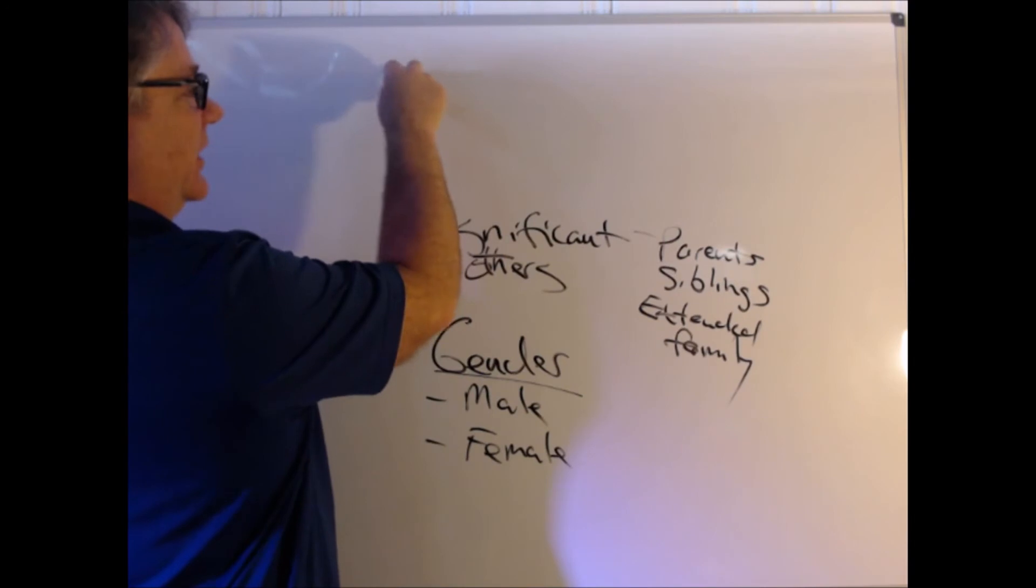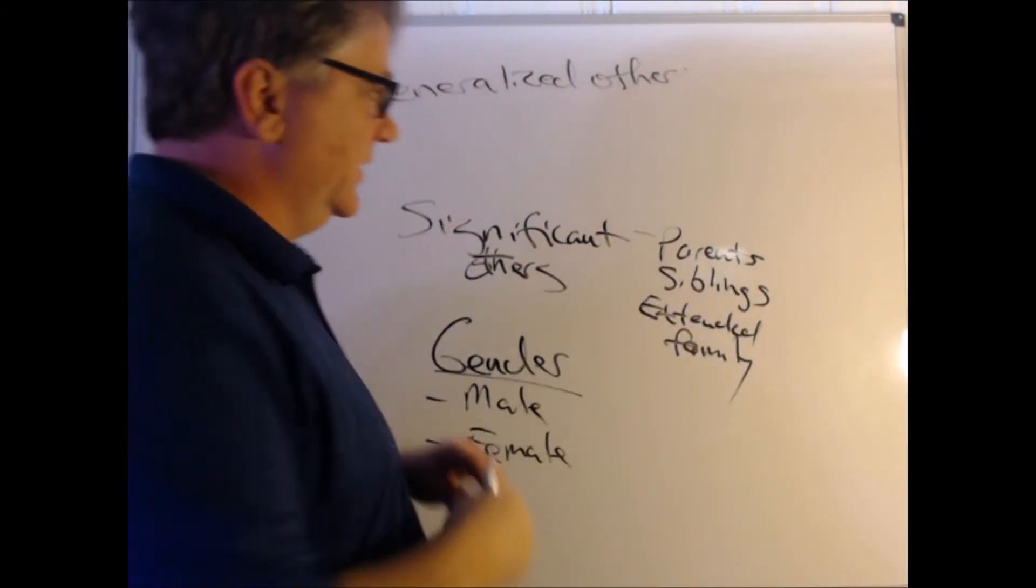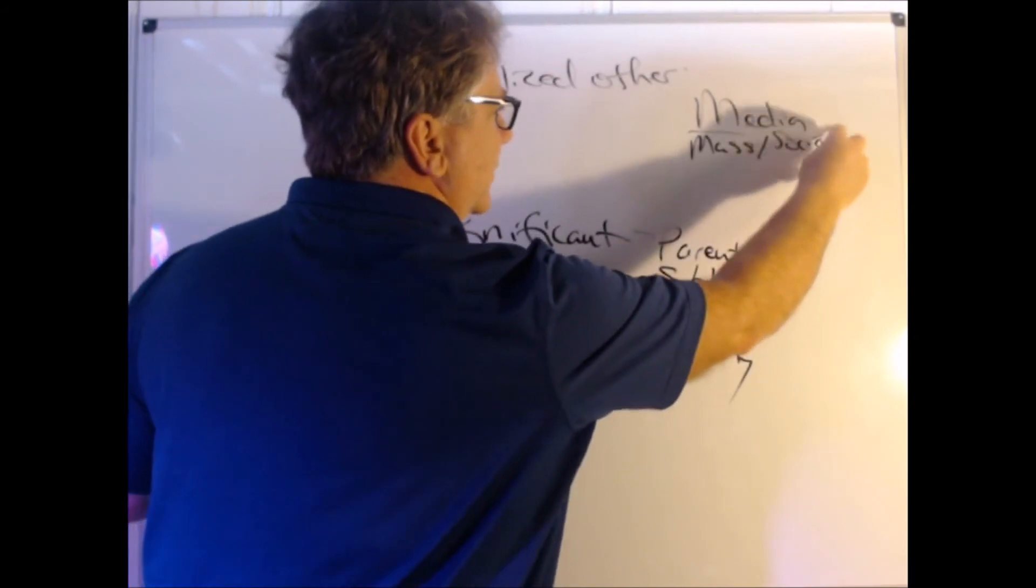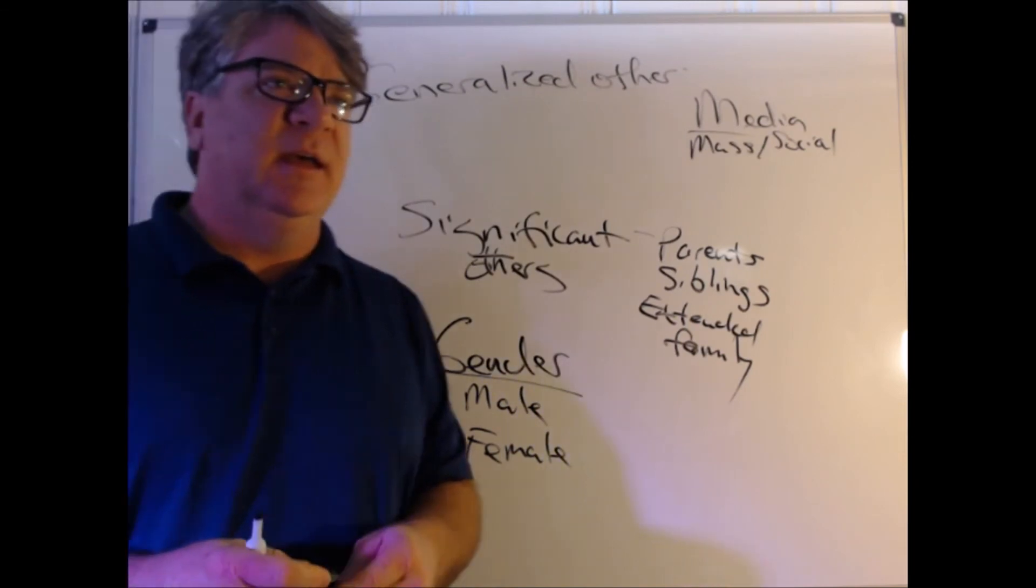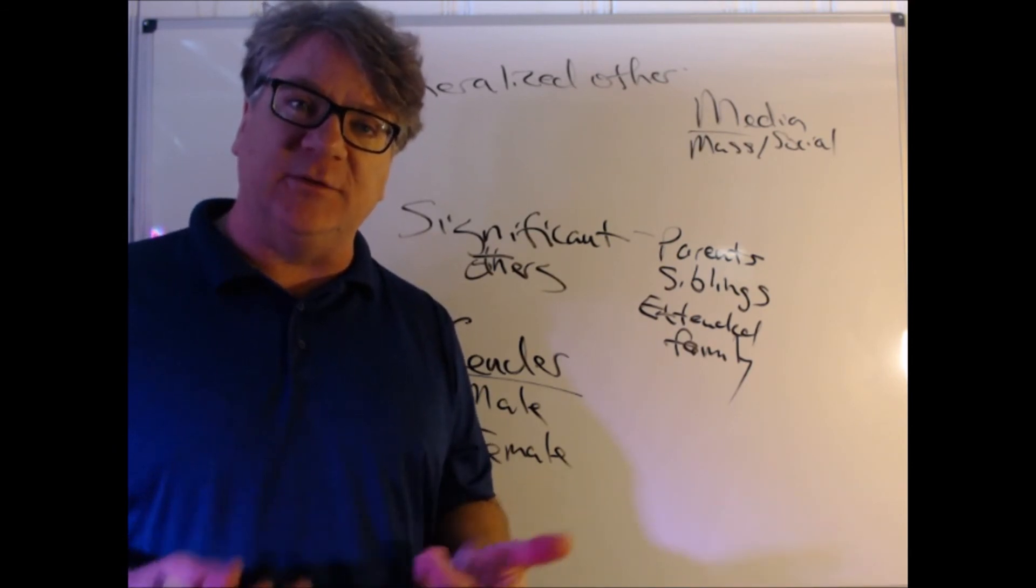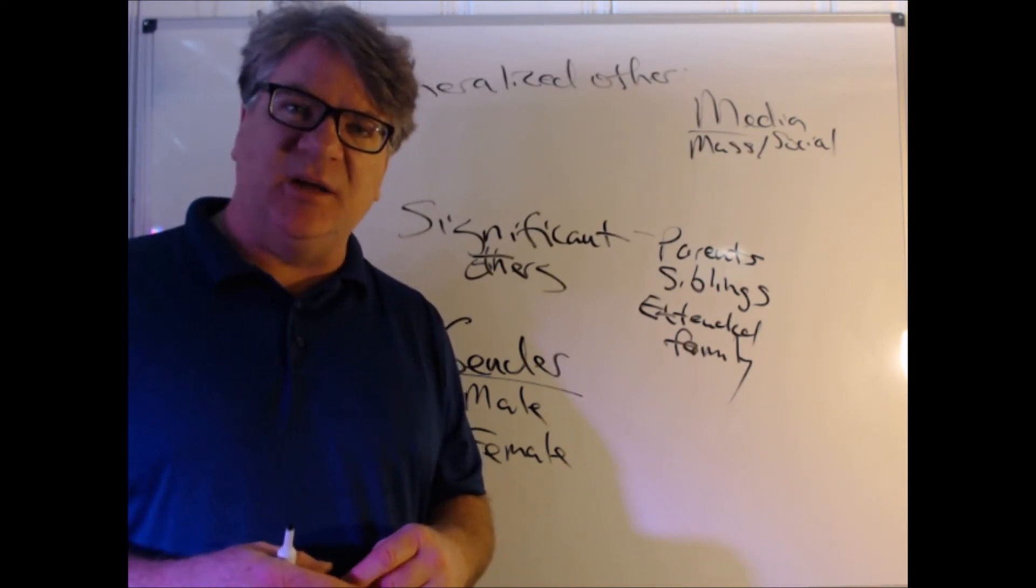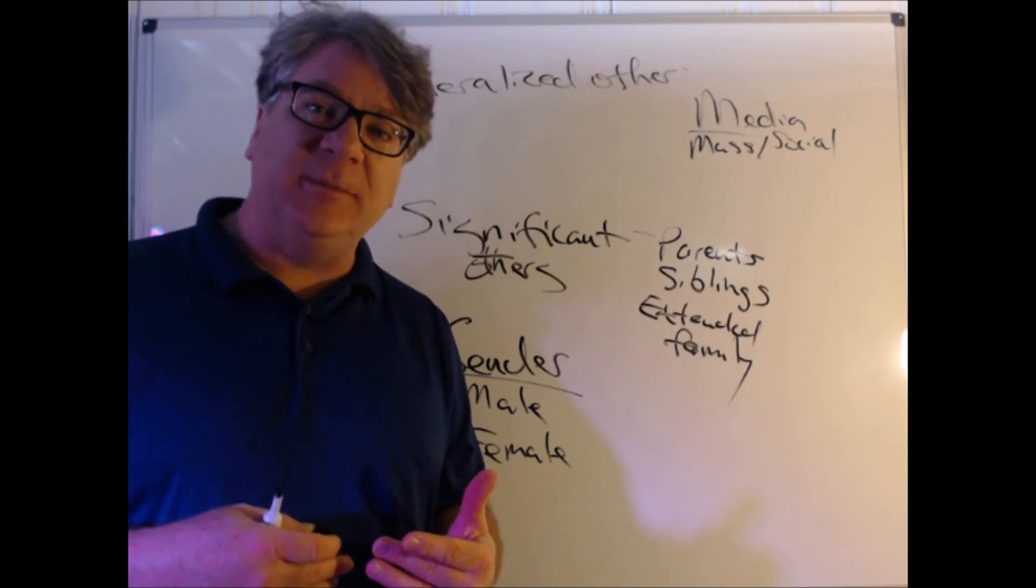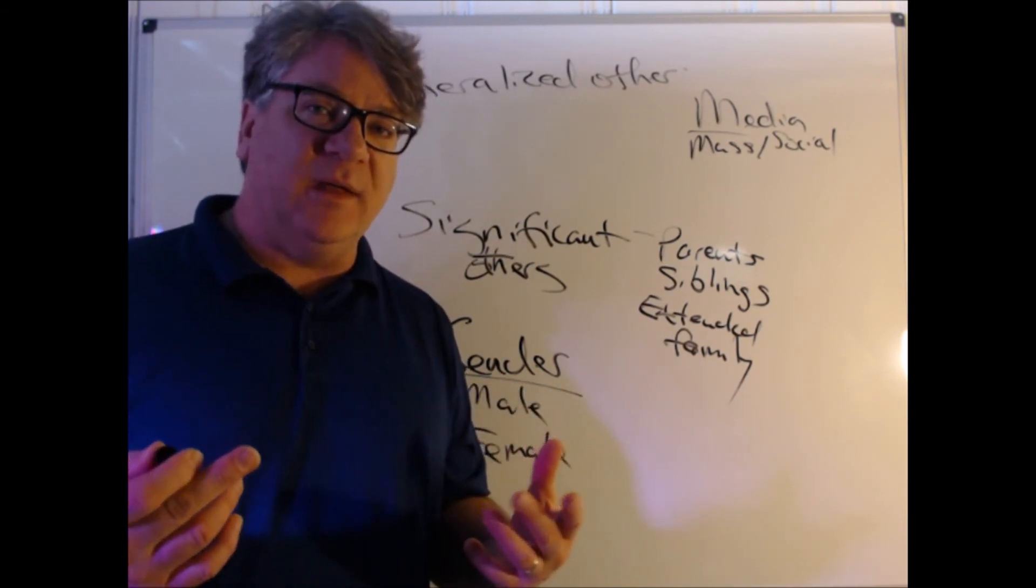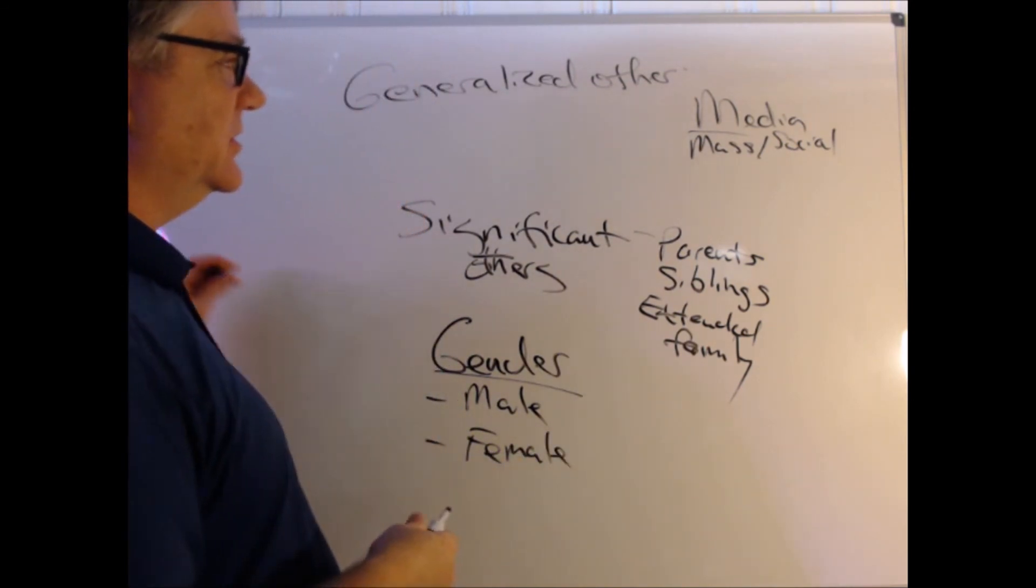We also can think about the generalized other. What messages do we receive in society at large? How do the media influence this? These are agents of socialization. Media could be mass or social media. I know some of you have younger brothers and sisters that might be in elementary school or middle school. How is social media influencing them in terms of who they're supposed to be regarding males or females? There's a lot of bullying that takes place now because our society has not done a very good job of helping young people to better understand how to interact with people on social media and what's expected not to happen on social media. This is going back to thinking also about sexuality.